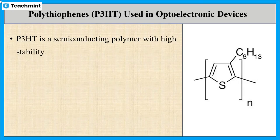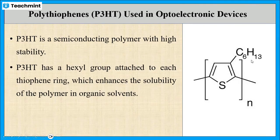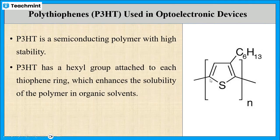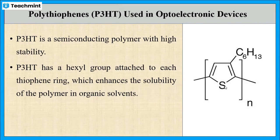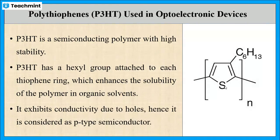P3HT is a semiconducting polymer with high stability. It has a hexyl group which is attached to each thiophene ring, and hence enhances the solubility in organic solvents. It acts as a P-type semiconductor as it exhibits conductivity due to holes.